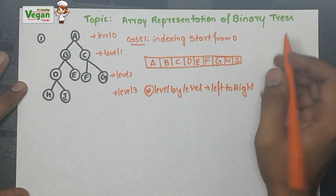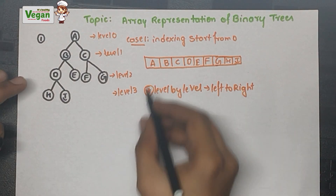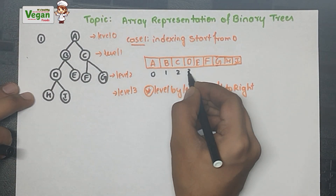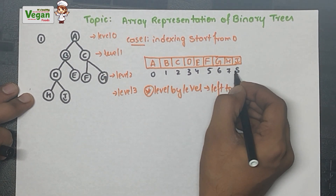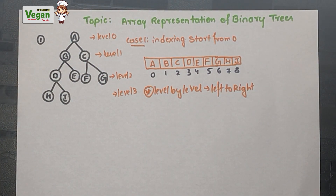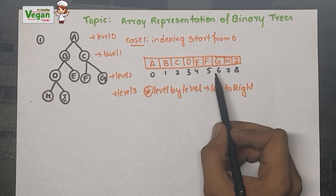In case 1, indexing starts with 0, so the indices are 0, 1, 2, 3, 4, 5, 6, 7, 8. When formulating the formulas — the short formulas used to detect elements in the array — there are two cases: starting with index 0 and starting with index 1. The formula will change depending on which case you use.